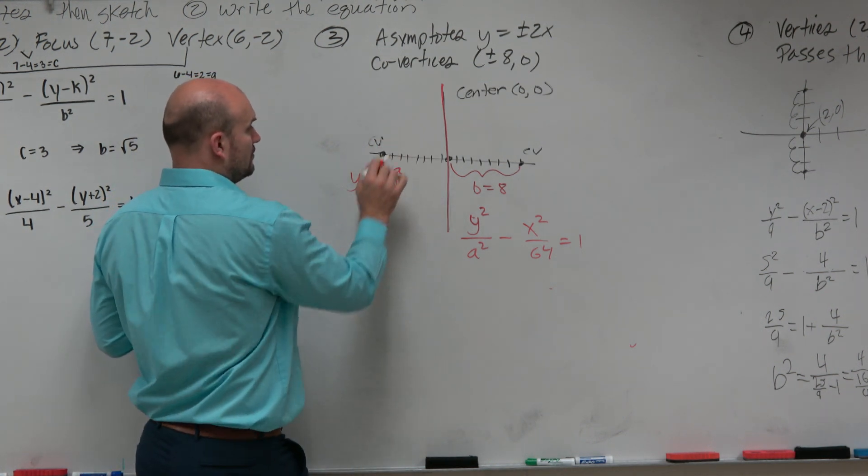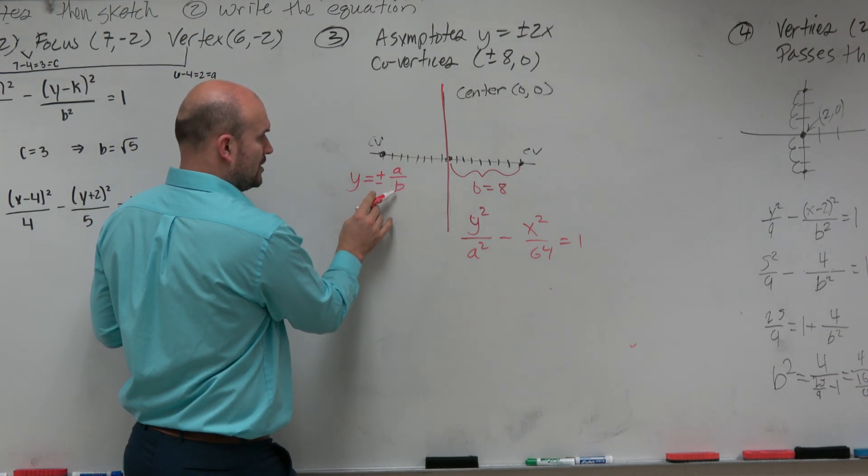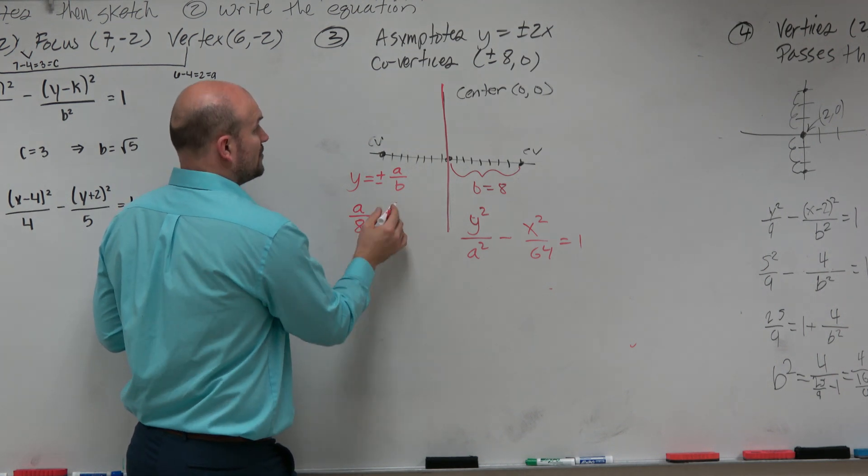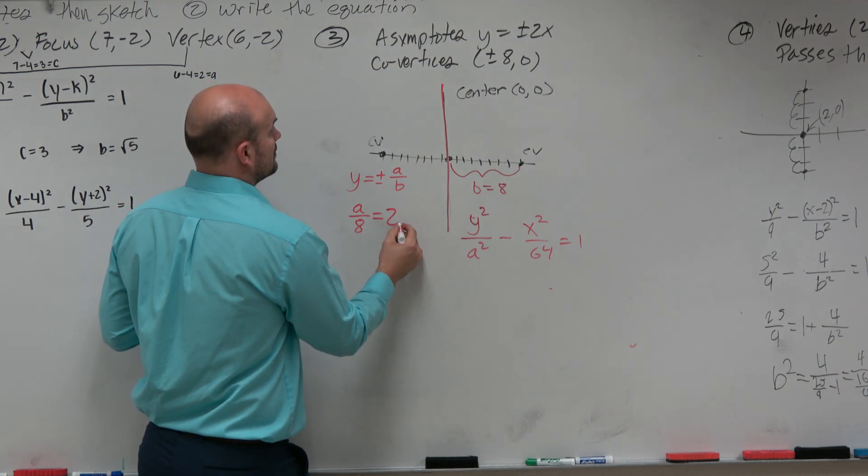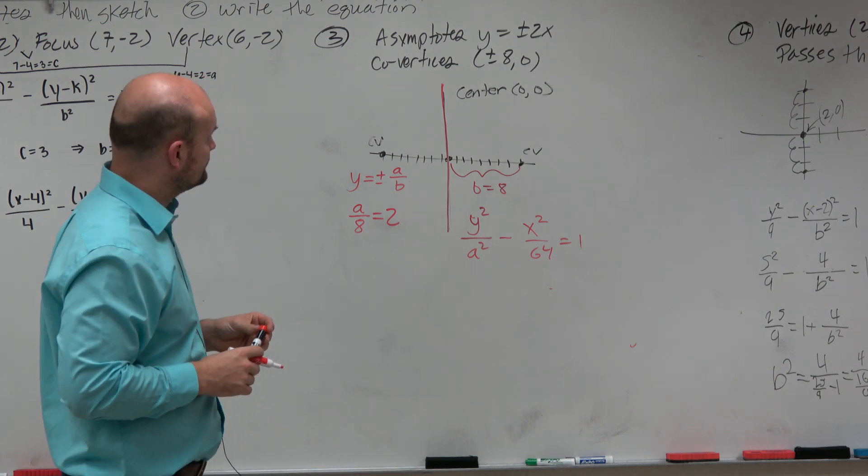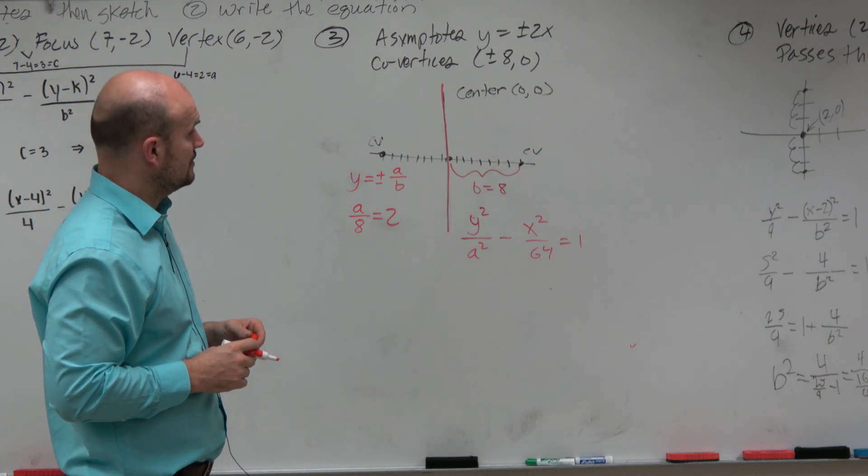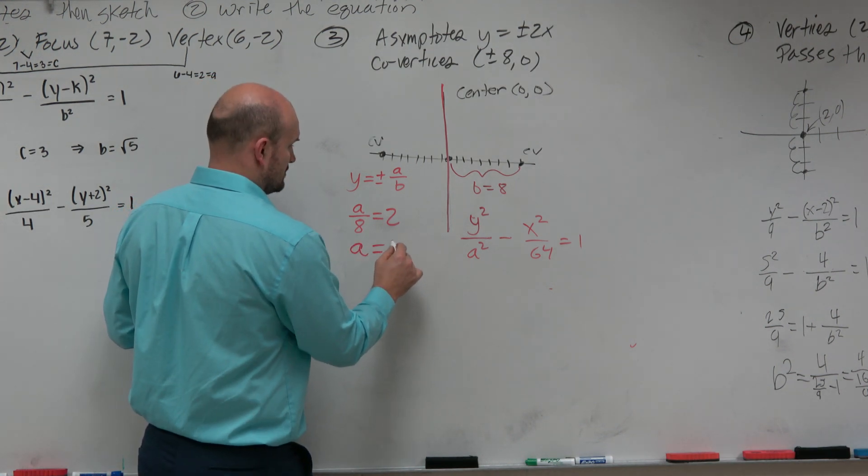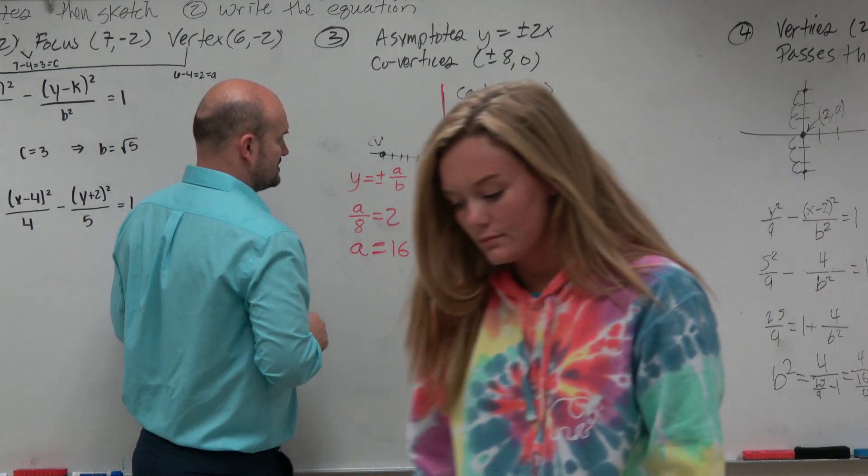Yeah. So we know we didn't know a, but we know b. So a over b is going to equal 2, right? So therefore, a is going to equal 16.